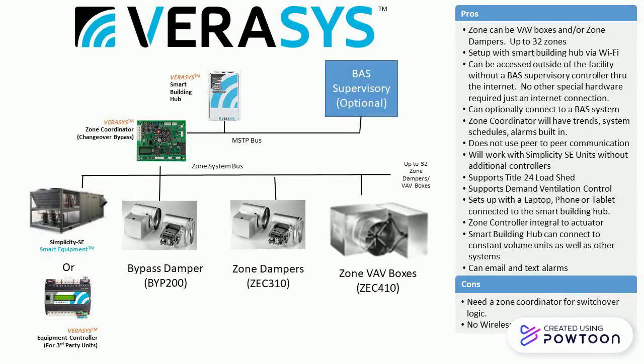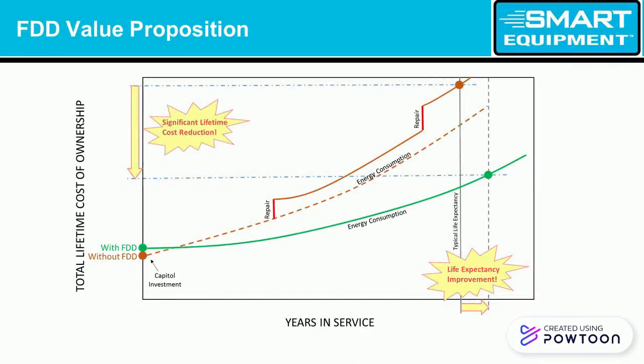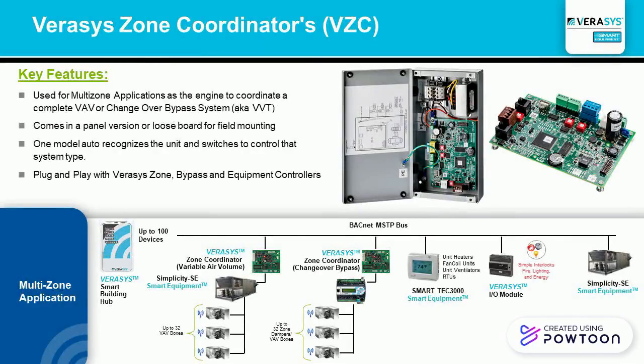Veracys has automated equipment of HVAC like 2800 unit fan coil, ventilators, packet units, and VAV box and more.